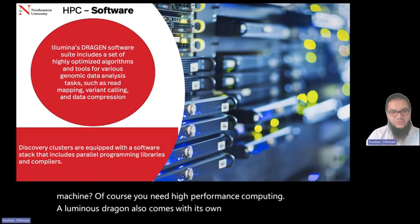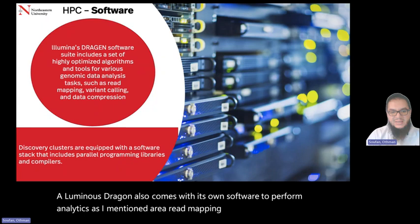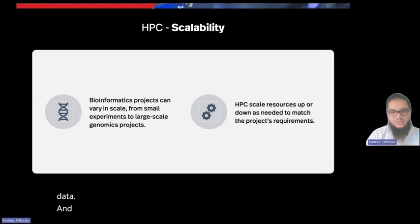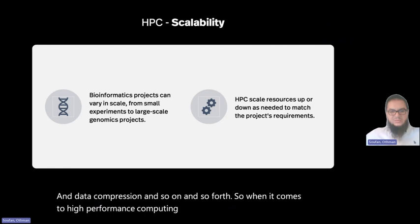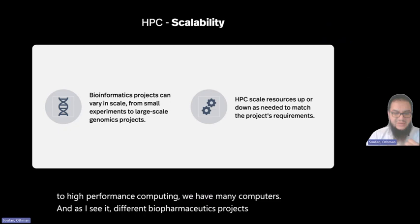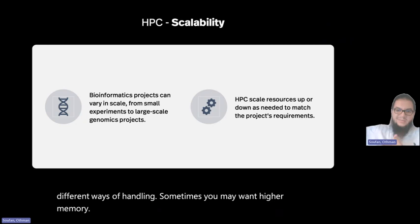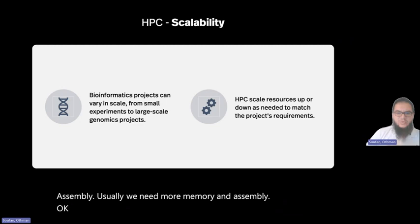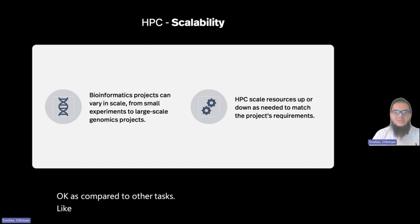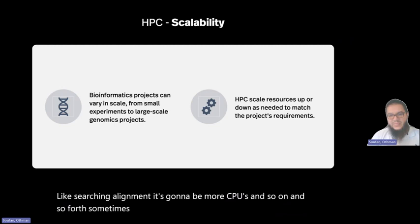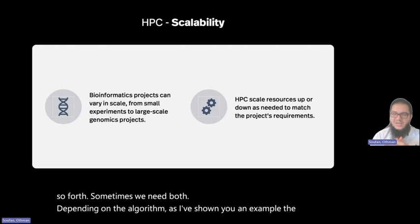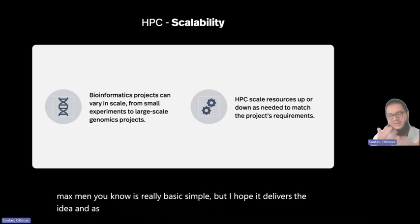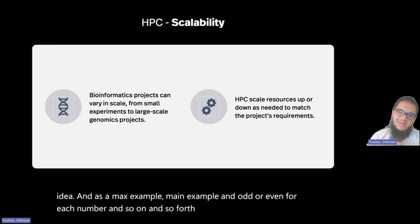Illumina NovaSeq 6000 is a high throughput sequencing platform developed by Illumina. So this type of sequencing system is designed to perform whole genome sequencing very efficiently but it can generate up to six terabytes of data and 20 billion single reads. It can be configured in fact to sequence up to 48 genomes in approximately two days. So imagine these numbers, imagine the speed that one can gain to do the processing. This is huge but then we need HPC systems. It's going to give me high storage. When you go to HPC systems you can store lots of data. If you don't have access to these resources why would you buy such machine? Of course you need high performance computing. Illumina's DRAGEN also comes with its own software to perform analytics as I mentioned area read mapping, variant calling and data compression and so on so forth.